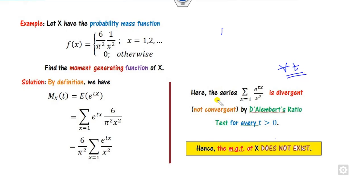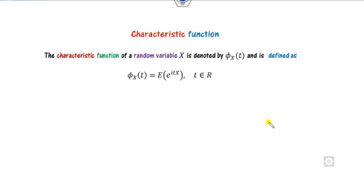Since the MGF does not exist in such cases, our target is to define a new function which is convergent for all values of t. For that we will use the characteristic function, denoted by phi. It is again a function from R to R.